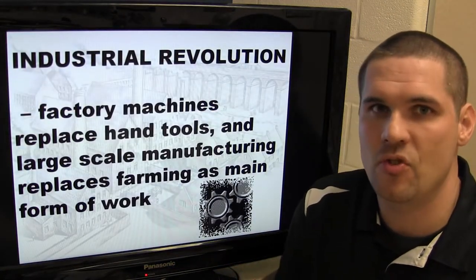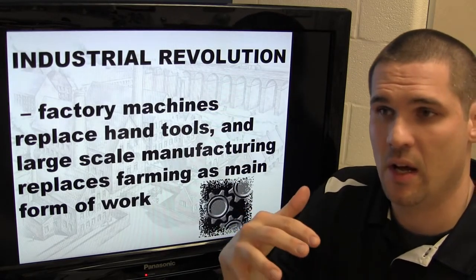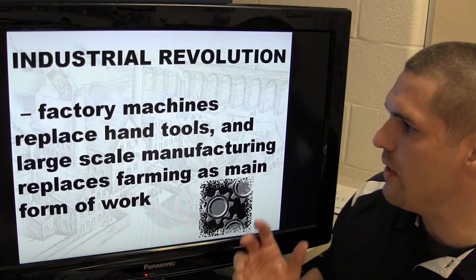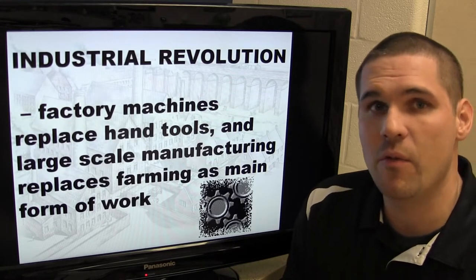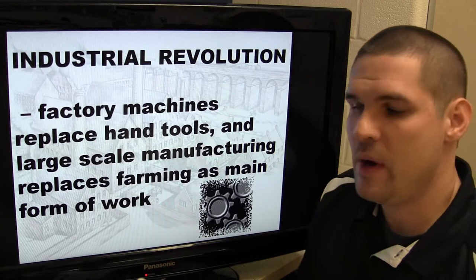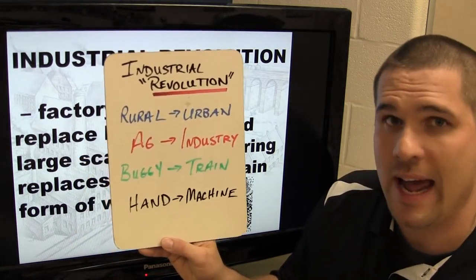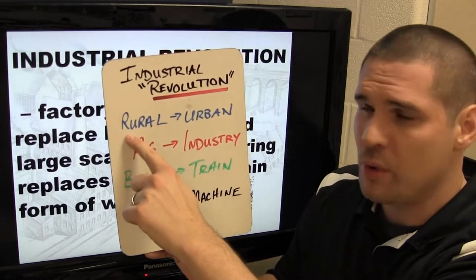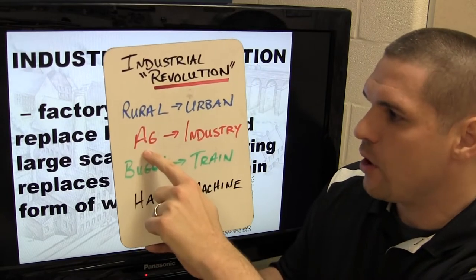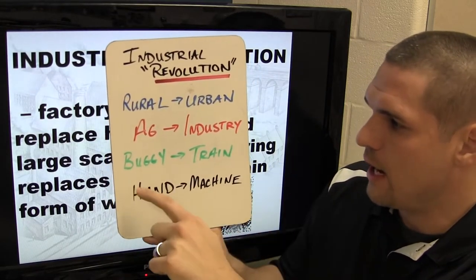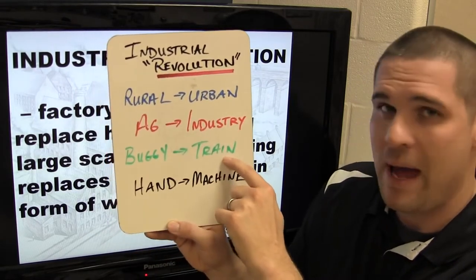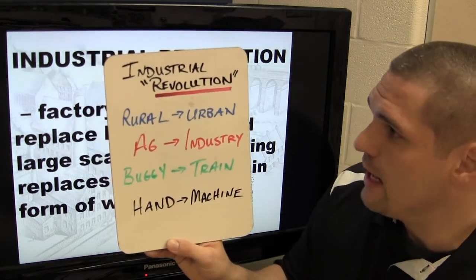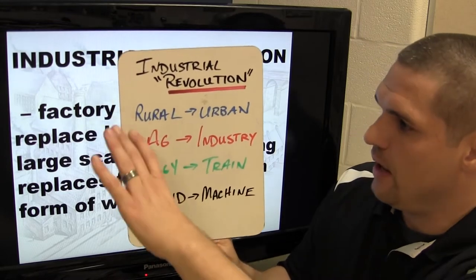The industrial revolution is a sudden, huge change in how we do things — factory machines replace hand tools, and large-scale manufacturing replaces farming as the main form of work. Its impacts are enormous: we go from rural to urban communities, from an agricultural to an industrial economy, from horse-drawn buggies to steam-powered trains, and from making goods by hand to tending machines that make goods for us. It truly was a revolution in how much changed because of machines.